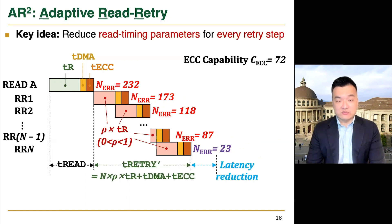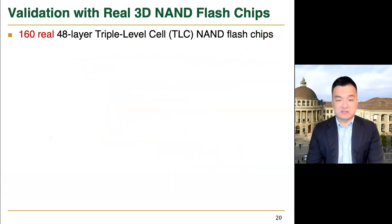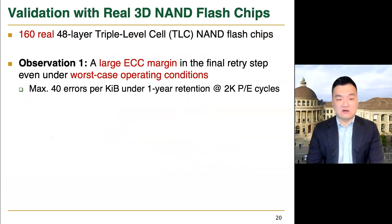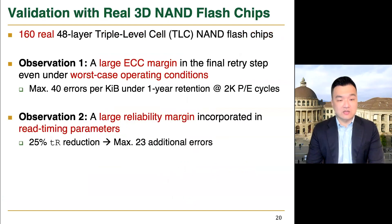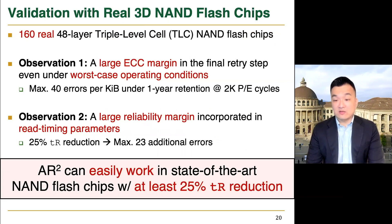However, reducing read timing parameters would inevitably increase the number of raw bit errors, so we need to ensure that the number of additional errors does not exceed the ECC margin in the final retry step, because otherwise, the ECC decoding of the final retry step would fail. We validate the feasibility of ARS using 160 real TLC NAND flash chips. We observed that there exists a large ECC margin in the final retry step even under worst-case operating conditions, and there is also a larger reliability margin that manufacturers incorporated into read timing parameters. So, we concluded that ARS can easily work in state-of-the-art NAND flash chips, guaranteeing at least a 25% reduction of the page sensing latency for every retry step.